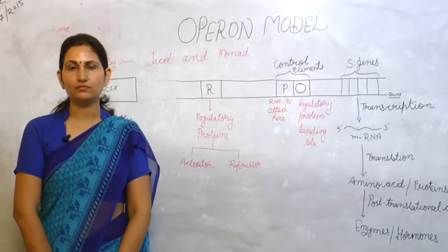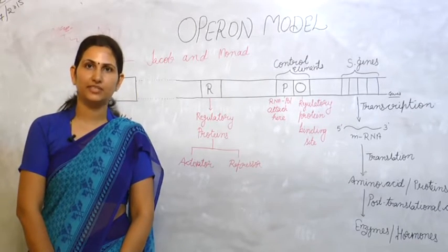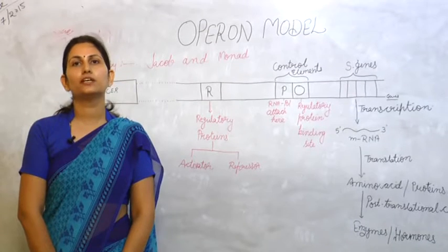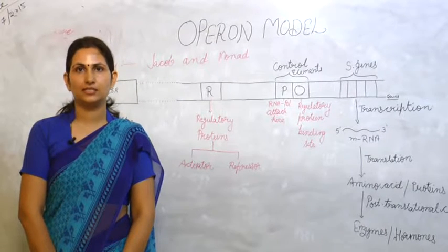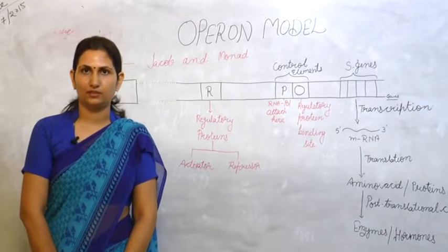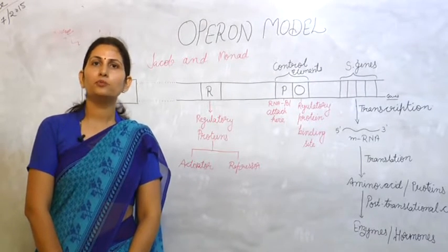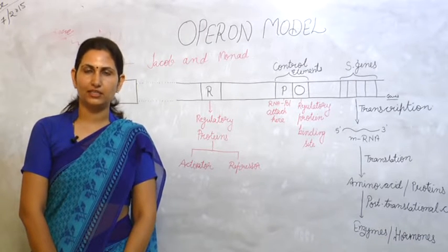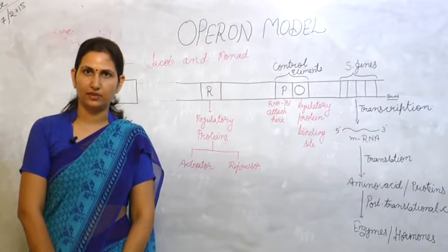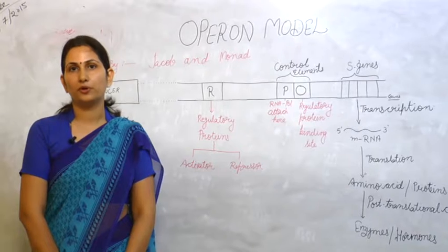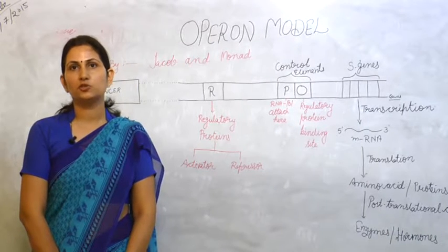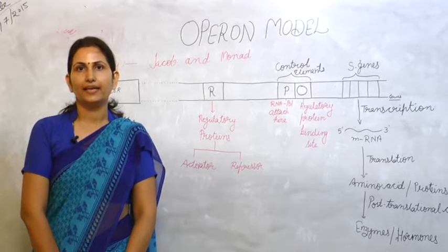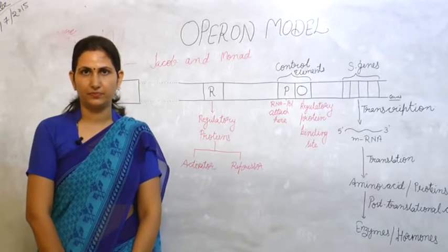My name is Kachin Sharma. I am faculty of science in Biani Group of Colleges. Today we are going to discuss the topic operon model. Operon model was proposed by Jacob and Monod in 1961. They discovered the operon in Escherichia coli, which is a bacteria and is a prokaryote basically.